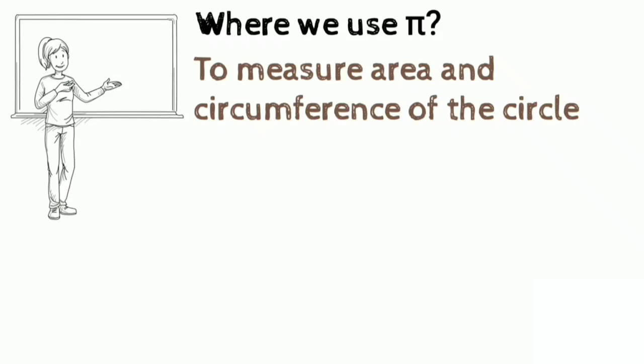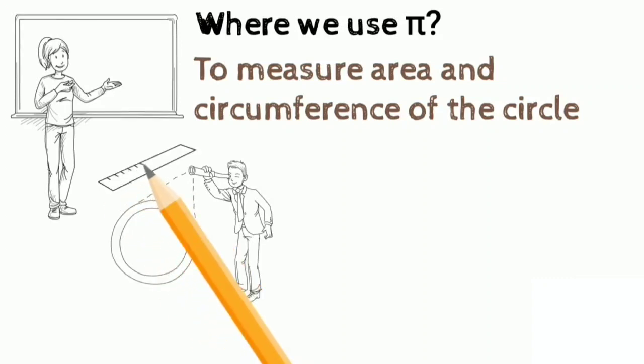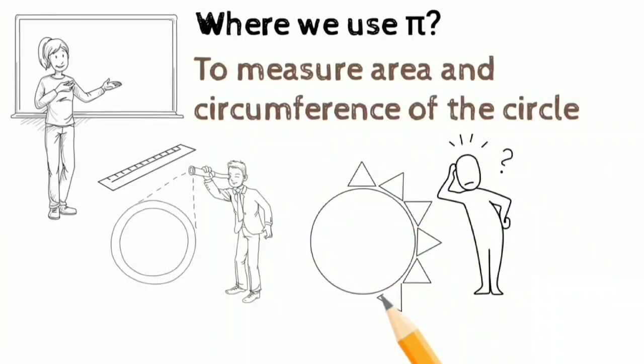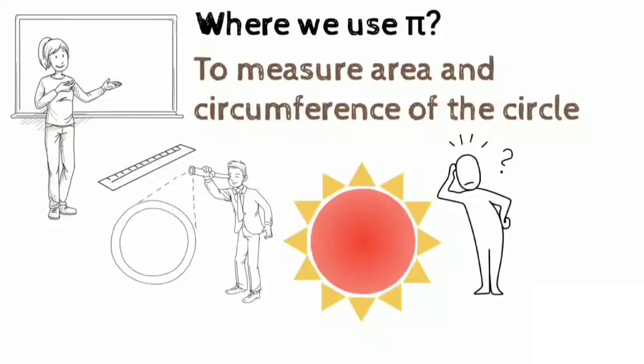Normally, we easily use ruler or instruments to measure circumference to a small circled objects. But, what should we do if the circle is bigger or larger? For example, how will you find circumference of the Sun? In that case, Pi will be helpful to find the circumference of the circled objects.